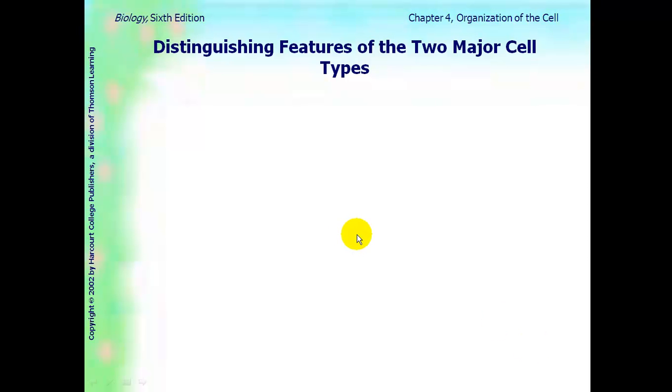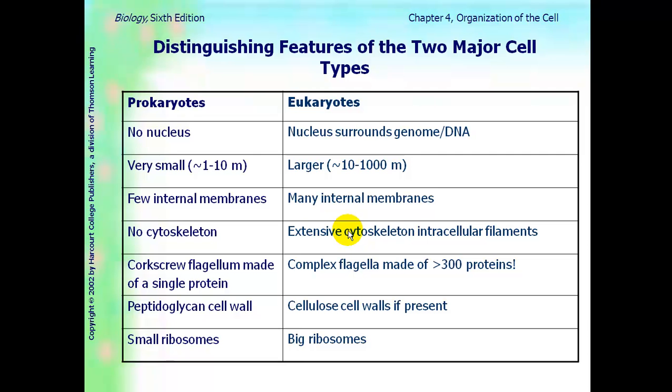This is the second podcast for Chapter 4 for AP Biology. First thing we're going to do is talk about two different types of cells. This chart is very important. I'm sure these are terms you've heard of: prokaryotes versus eukaryotes.